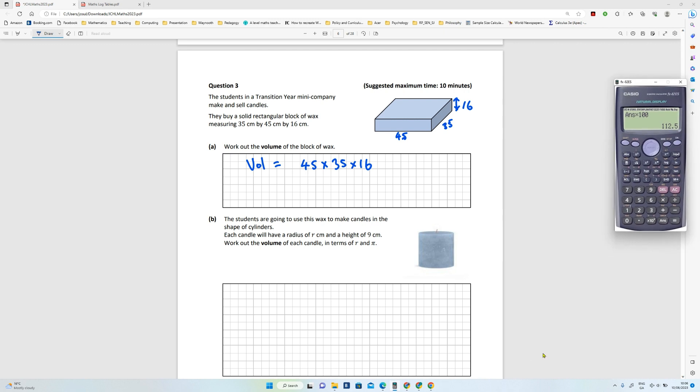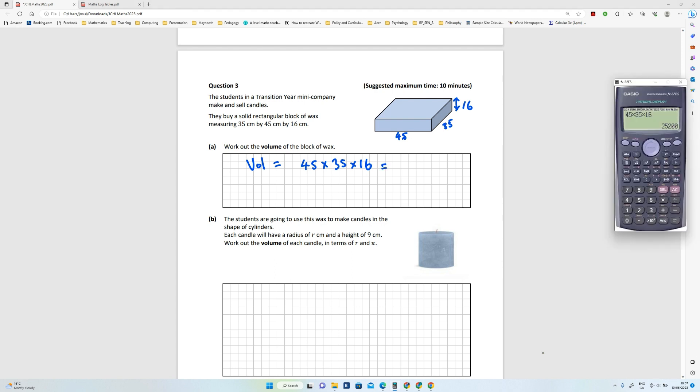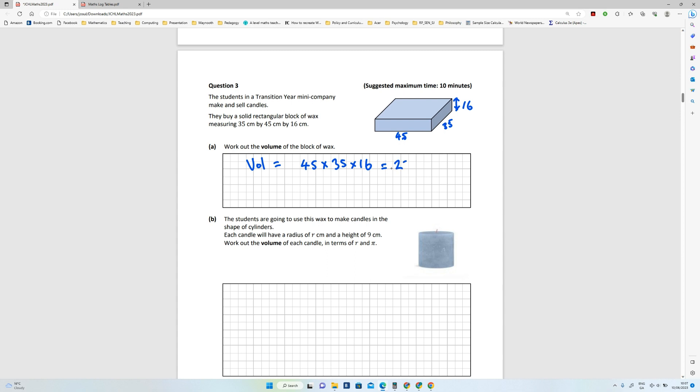So crank that into your calculator quickly. 45, 35, and 16. That gives us 25200, and that's going to be centimeters cubed.